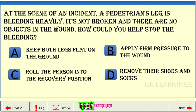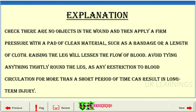At the scene of an incident, a pedestrian's leg is bleeding heavily. It's not broken and there are no objects in the wound. How could you help stop the bleeding? A: keep both legs flat on the ground. B: apply firm pressure to the wound. C: roll the person into the recovery position. D: remove their shoes and socks. The correct answer is B: apply firm pressure to the wound. Explanation: Check there are no objects in the wound, then apply firm pressure with a pad of clean material such as a bandage or cloth. Raising the leg will lessen the flow of blood. Avoid tying anything tightly around the leg, as restriction to blood circulation for more than a short period can result in long-term injury.